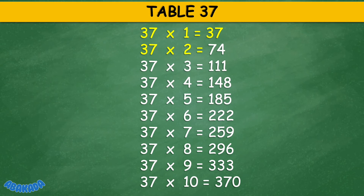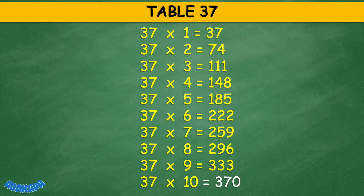Table 37: 37 times 1 equals 37, 37 times 2 equals 74, 37 times 3 equals 111, 37 times 4 equals 148, 37 times 5 equals 185, 37 times 6 equals 222, 37 times 7 equals 259, 37 times 8 equals 296, 37 times 9 equals 333, 37 times 10 equals 370.